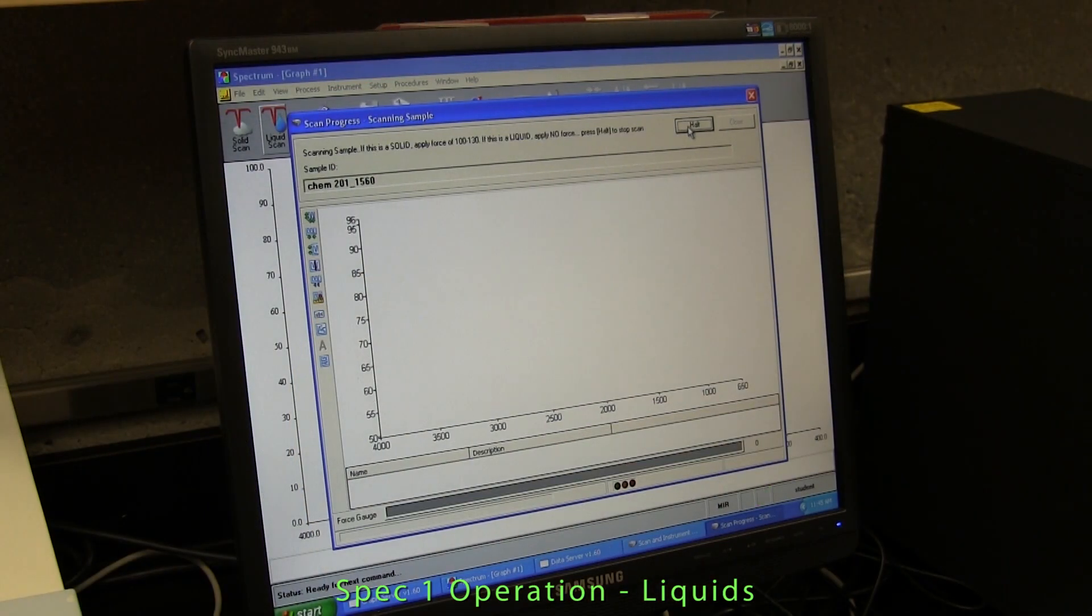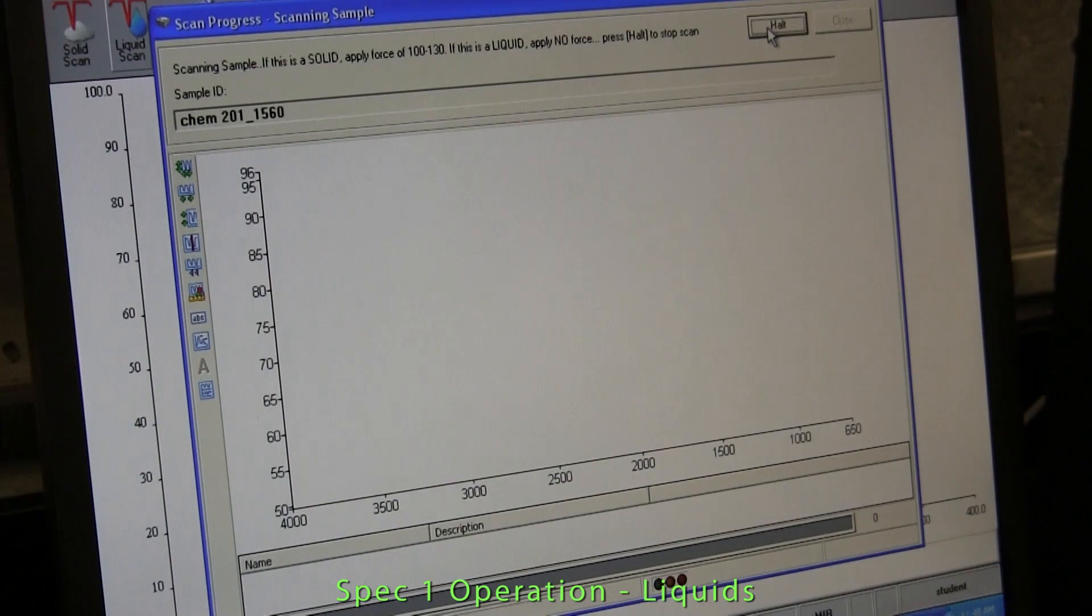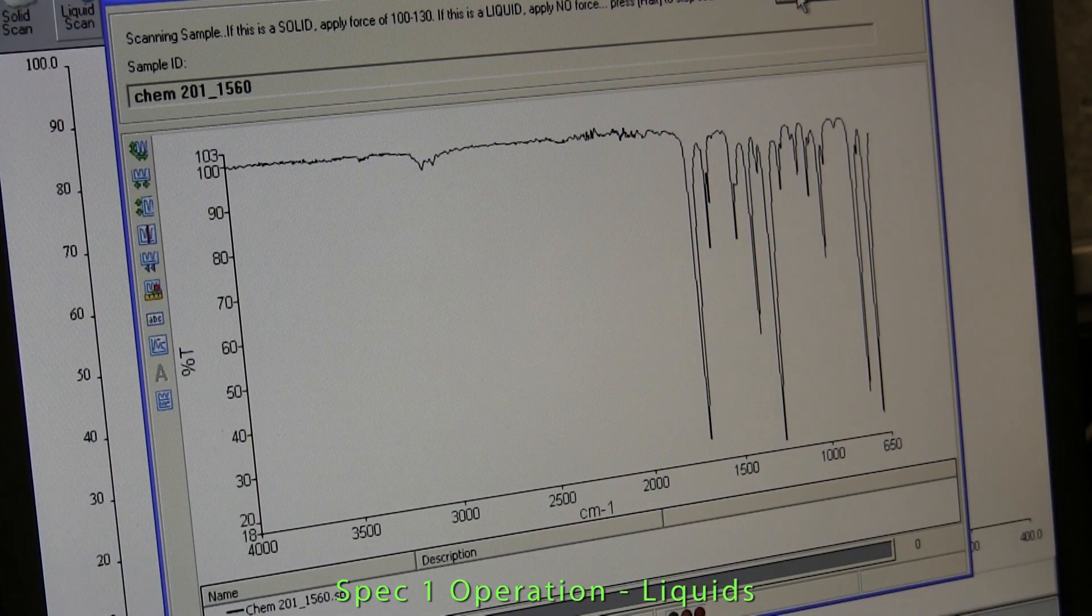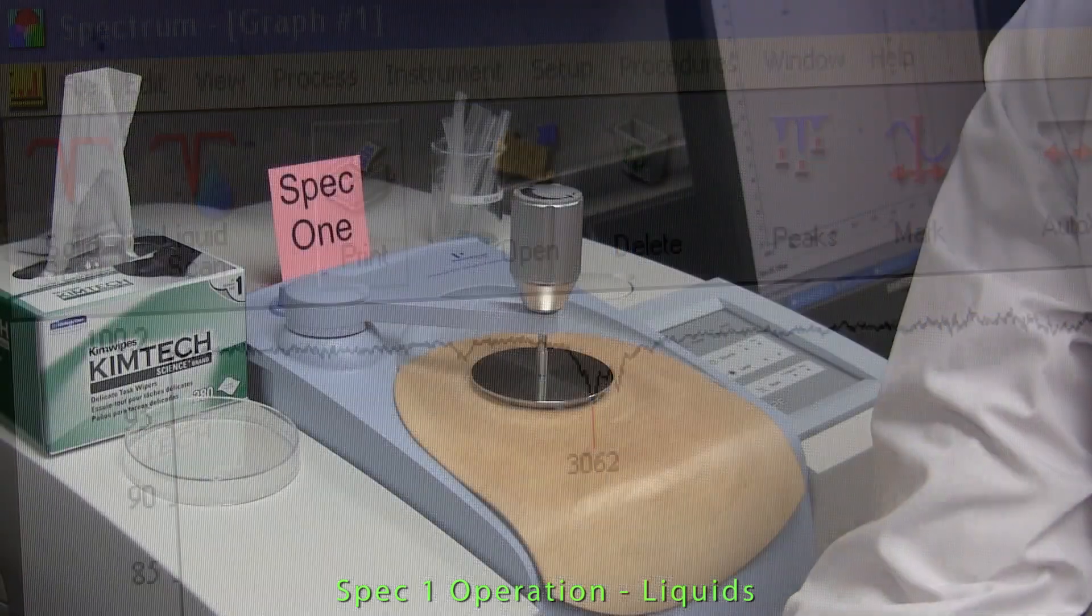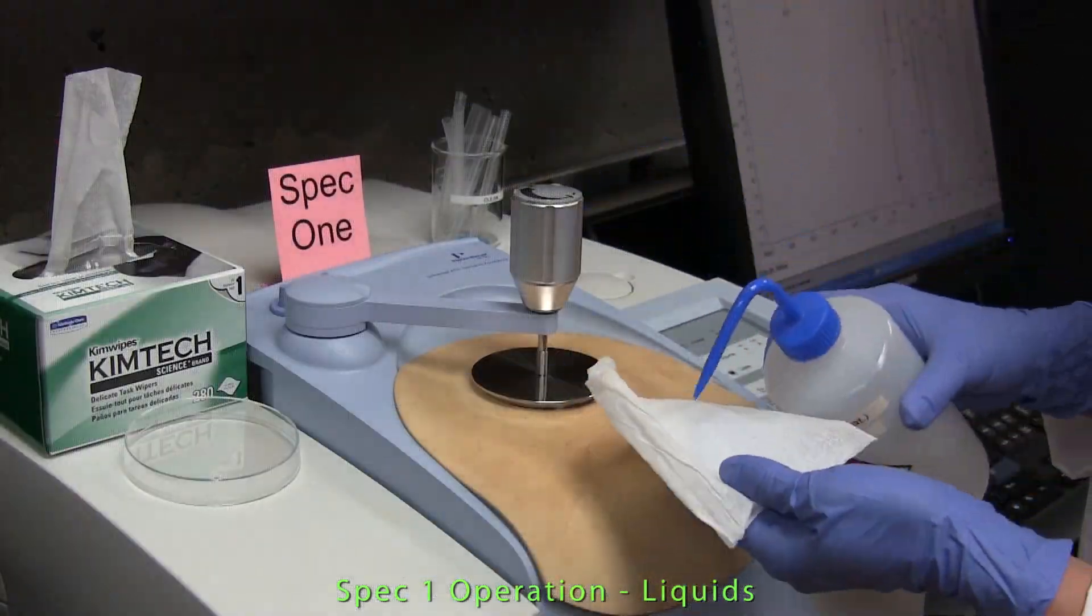Everything is the same as for a solid sample except no pressure is used with the liquid. A spectrum is obtained and printed out as usual. Cleanup is the same as it is for solids.